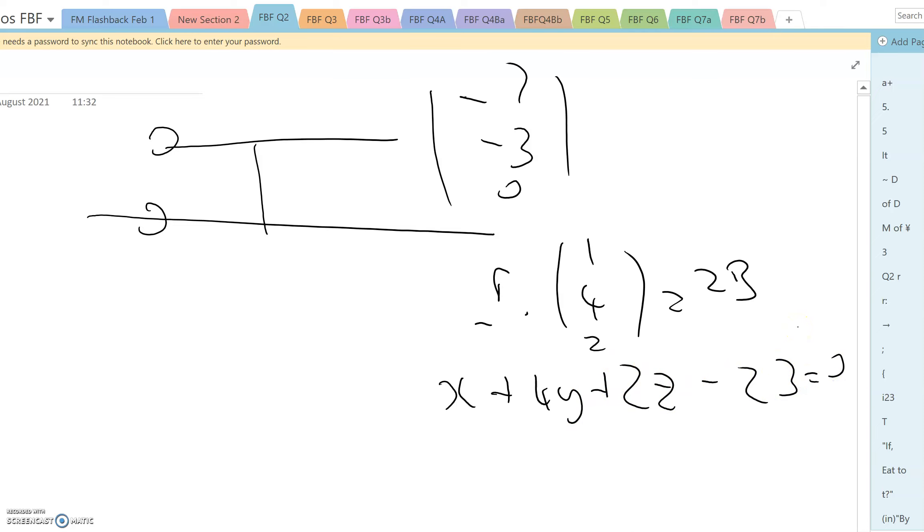Put all that into the equation and we get minus 7 times 1 is minus 7, minus 3 times 4 is minus 12, 0 times 2 is 0, and minus 23. Divide all that by 1 squared plus 4 squared plus 2 squared.